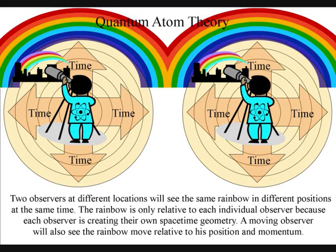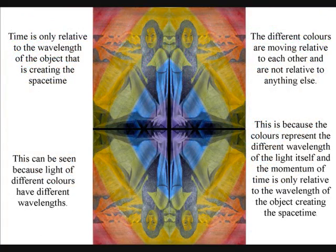You might be thinking that this is just because all the angles are changing, and you will be right. But the important thing is that the different colours are moving relative to each other and are not relative to anything else. This is because the colours represent the different wavelengths of the light itself, and the momentum of time is only relative to the wavelength of the object creating the space-time.